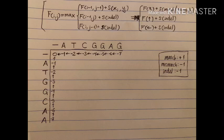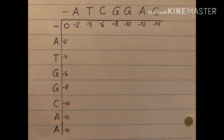Then you move on to the rest of the table. It's important to note that your indel score might not be negative one — it might be negative two. So instead of having increments of minus one, minus two, minus three, you may have increments of minus two, minus four, minus six.